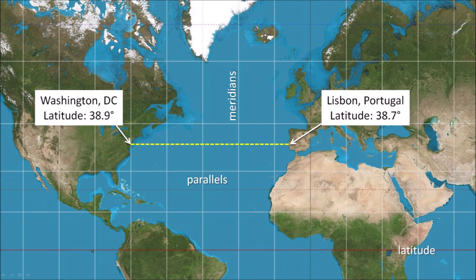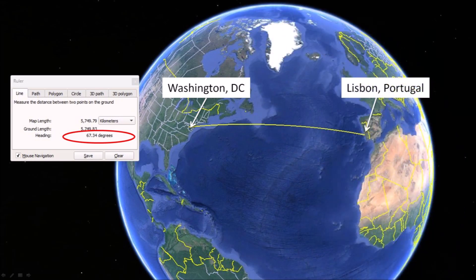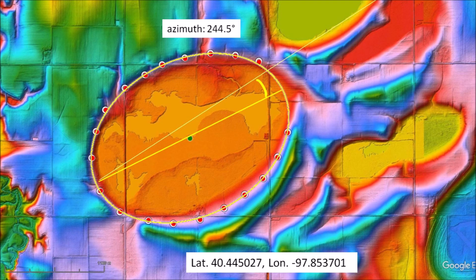From the Mercator projection, it appears that we can draw a line perpendicular to the meridians to connect Washington DC to Lisbon, Portugal, since both cities have approximately the same latitude. However, a great circle trajectory with a heading of 90 degrees from Washington DC goes to the Western Sahara in Africa, because the Earth is spherical and not cylindrical. In order to connect Washington to Lisbon with a great circle trajectory, we need to start with a heading of 67.34 degrees from Washington. That is the explanation of why the azimuth line of this basin appears different at the local level and when it is extended as a great circle trajectory on a flat map.